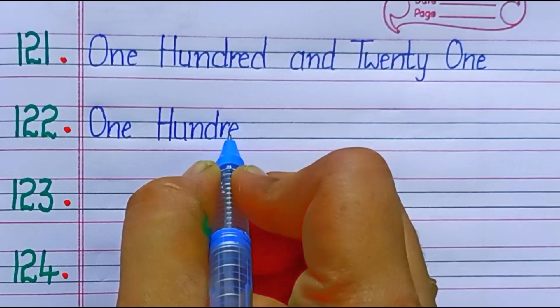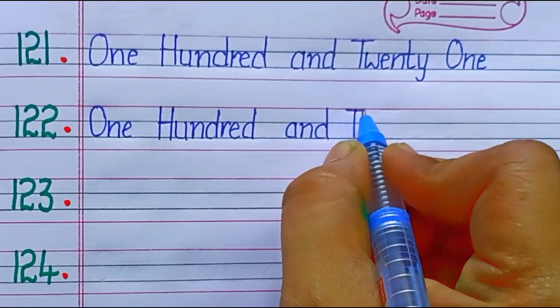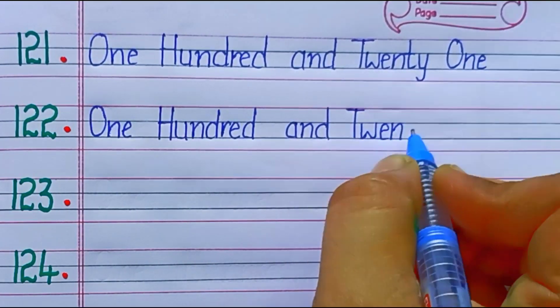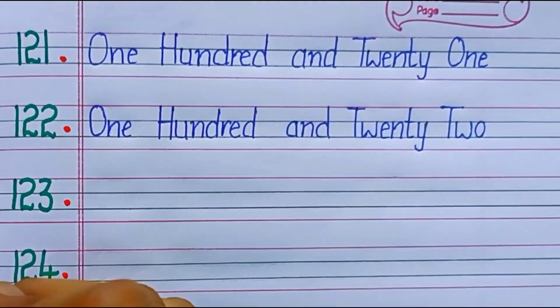122. One hundred twenty-two. T-W-E-N-T-Y, twenty. T-W-O, two.